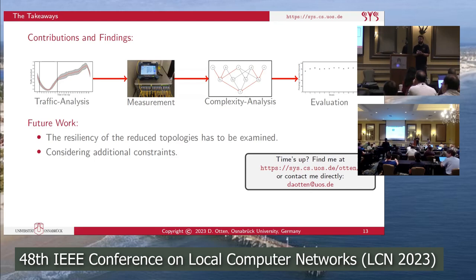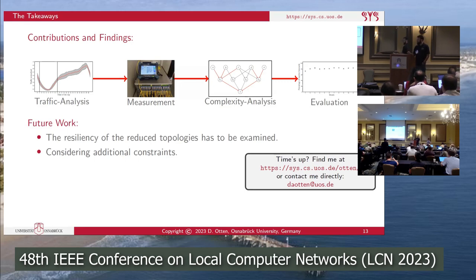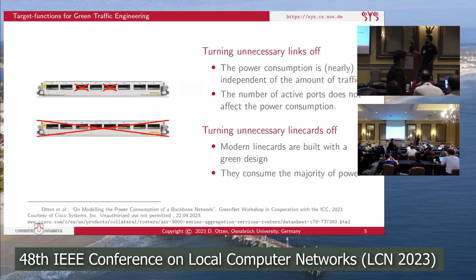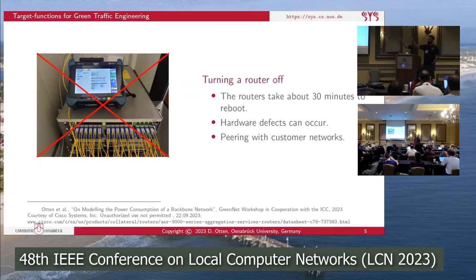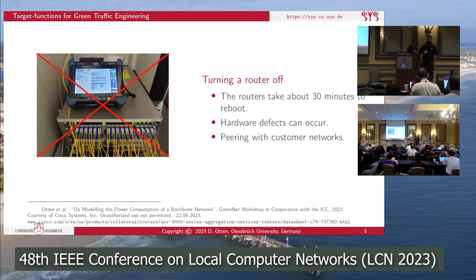Thank you for the great presentation. I like the idea of turning some routers off. However, what is the discussion around the reliability of the network when too many routers are turned off? The answer is that by turning a router off, you must steer all traffic away from it, so no traffic can enter or leave the network through that router. Since routers are also connected to external customer networks, turning one off would exclude those customers from the backbone — and the whole point of the backbone network is to connect customer networks. So that approach is not feasible.